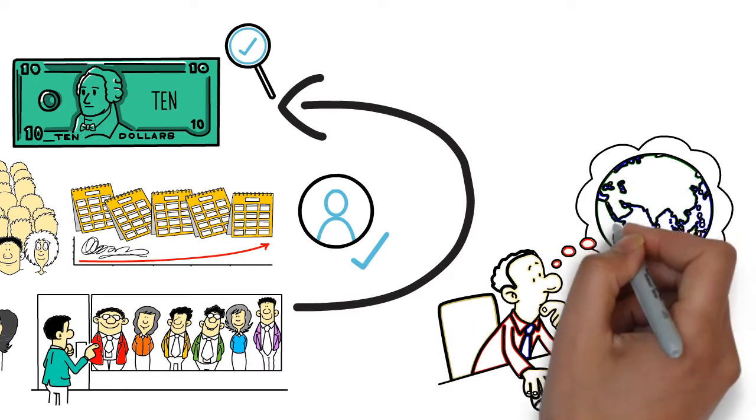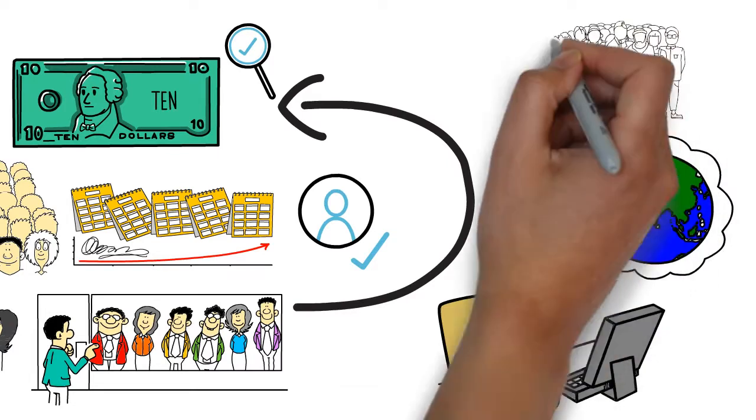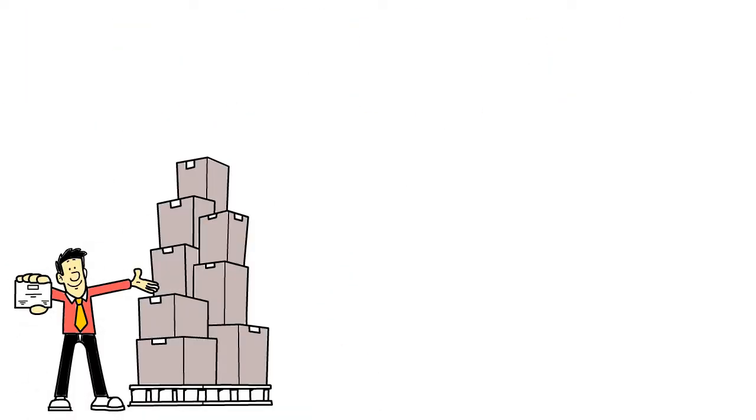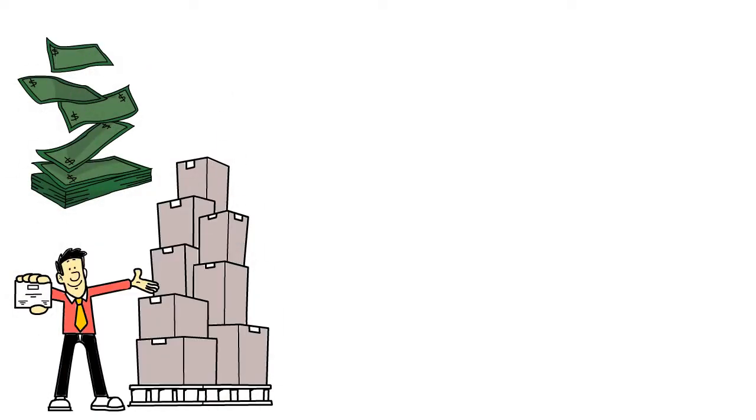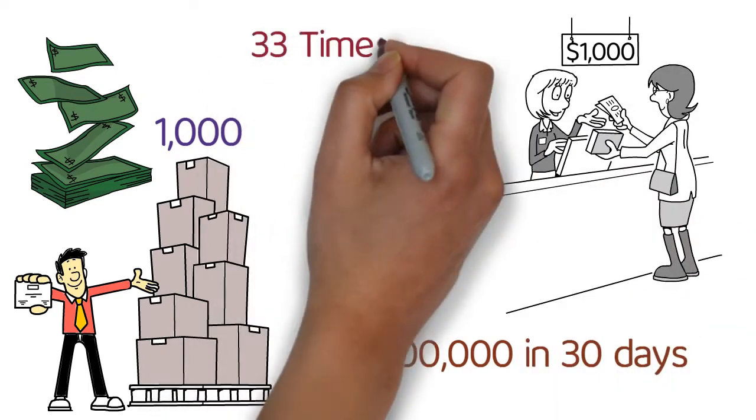With the power of selling products online, you can reach 100,000 people easier than you might think. Even if you had a product that net you $1,000, you would only have to sell that product 1,000 times. Now, if we look at our original goal of making $1,000,000 in 30 days, you would have to sell that $1,000 product about 33 times each day.